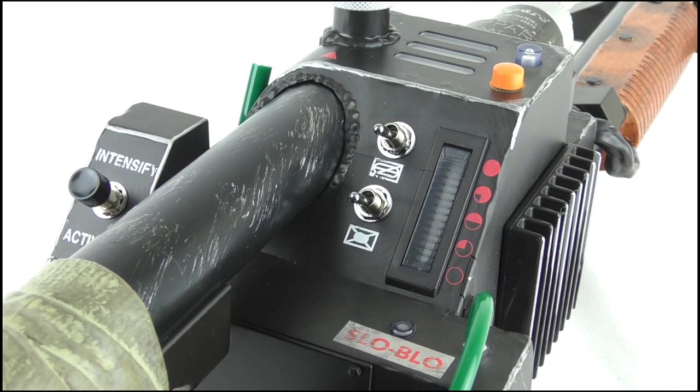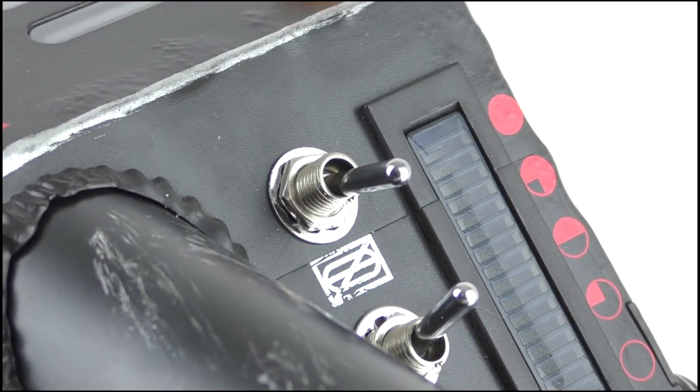Next, the upper main power switch has to be flicked, which will activate the lights across the body of the wand as well as the power level indicator.